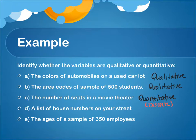The next variable: a list of house numbers on your street. House numbers — do they measure something on your street? No. Since they're not measuring or counting, they're actually categorizing the different houses on the street. This is also a qualitative variable that is disguised as a numerical variable.